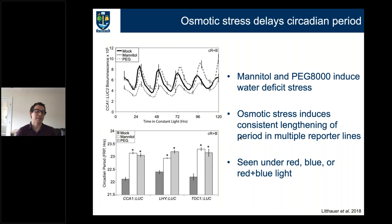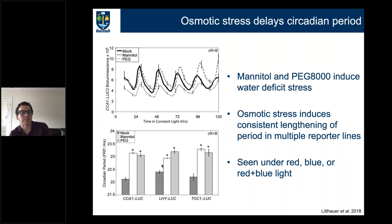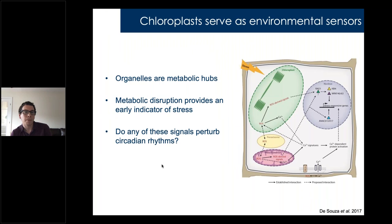In the black we have wild-type plants, and the PEG or mannitol-treated plants alongside. Although they're synchronized at the start, by four or five days in constant conditions there's a discrepancy between where wild-type is keeping time and where the osmotically stressed plants are keeping time. In three different transgenic lines each expressing a different circadian reporter, we see a lengthening of the circadian clock — an extension of period by about one hour — when you osmotically stress these plants. We see this under red, blue, or red-and-blue light; it seems to happen whenever you apply stress.